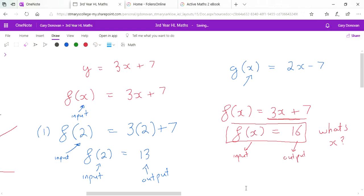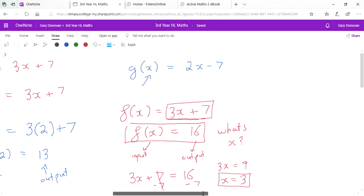If we wanted to solve this, we'd get our equation and put it equal to the output: 3x plus 7 equals 16. Then we'd solve for x the way we normally do: 3x equals 9, x equals 3.